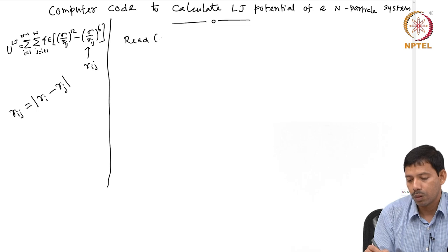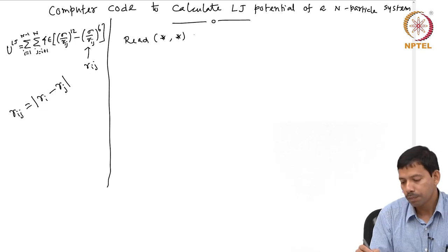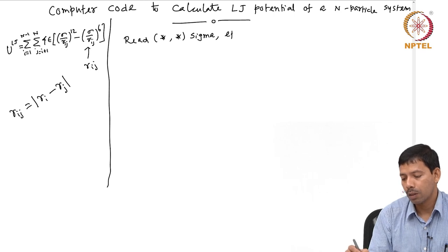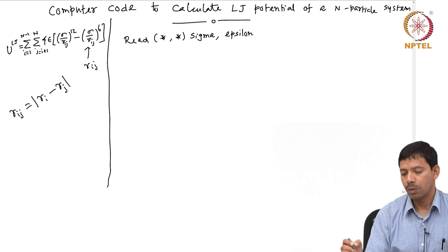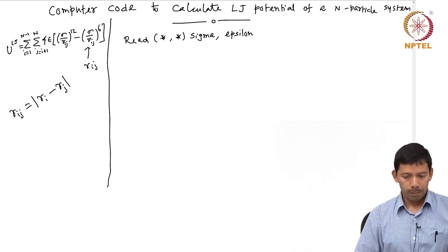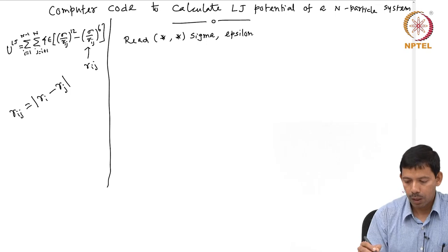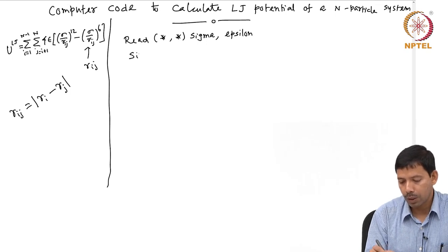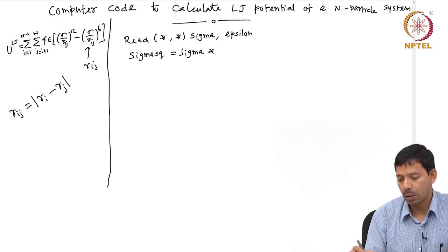I read sigma and epsilon on the screen. After reading them, I calculate sigma squared by multiplying sigma with sigma.